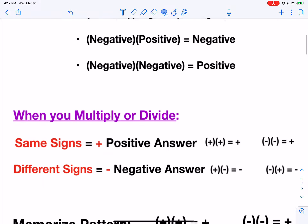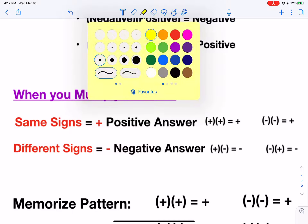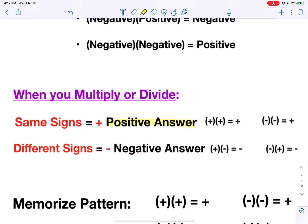Or you can just remember that when you multiply or divide, if they have the same signs, then they're going to have a positive answer — two positives equal a positive, or two negatives equal a positive. In contrast, if they have different signs, then you get a negative answer, so if one's positive and one's negative, your answer will be negative. Same signs positive, different signs negative.